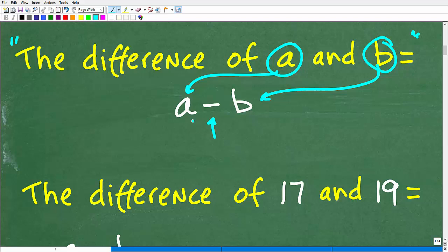And these two numbers are separated by the subtraction operation. So the difference of 17 and 19, we have to consider the order. That's 17 minus 19, not 19 minus 17. And this has huge implications when we actually calculate this out.